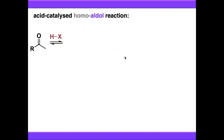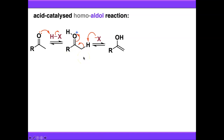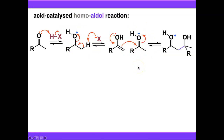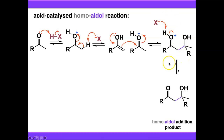The acid-catalysed reaction is not too different from the base-catalysed one — it just proceeds via an enol rather than an enolate. Starting with your carbonyl compound under acidic conditions, which is fully reversible, we protonate our carbonyl compound first, which makes it more amenable to enolisation. We form the enol and it reacts with another equivalent of the carbonyl compound — the electrophilic carbonyl is protonated because of the acidic conditions — and we get the same sort of reaction. Removing a proton gives us our homoaldol addition product, exactly the same as in the base-catalysed case.